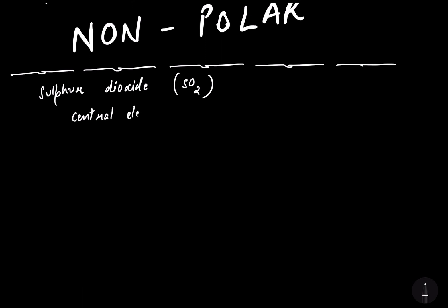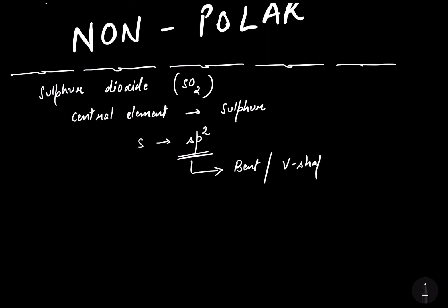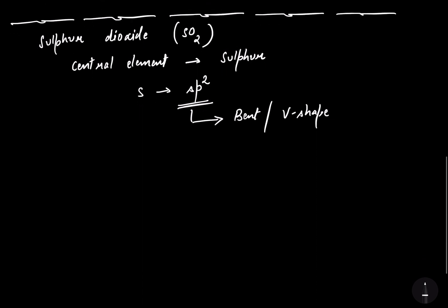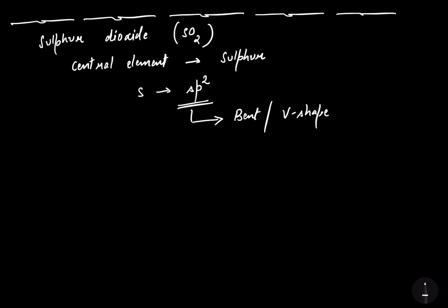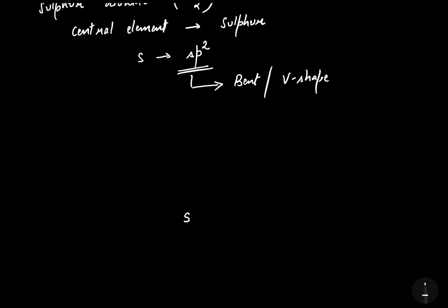Now in the SO2 molecule, the central element is sulfur. We have to talk about the hybridization of sulfur in the SO2 molecule, which comes out to be sp2. The standard geometry for sp2 hybridization is trigonal planar, but in the case of SO2, one of the positions will be occupied by a lone pair, so the molecular geometry will be bent or V-shape. To understand this topic, please go back to the topics of hybridization and listen to them carefully. Now let's make the structure of the SO2 molecule.